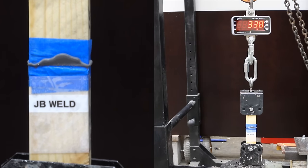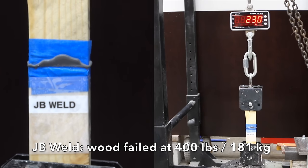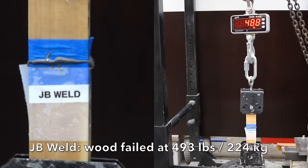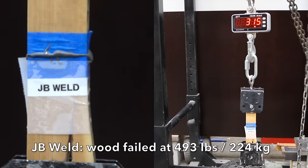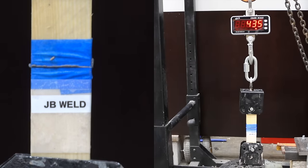So can JB Weld do any better than 3M? The wood failed at 400 pounds on the first sample. The second sample was even better, but the wood failed again at 493 pounds. The third was down to 469, and the wood broke again.